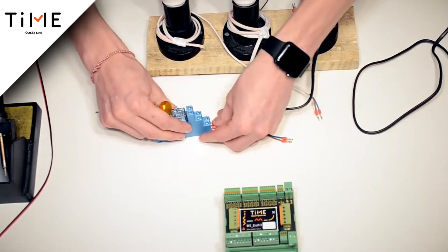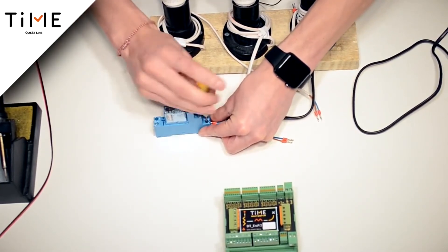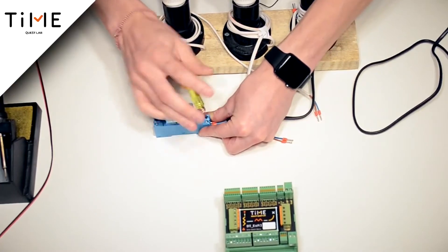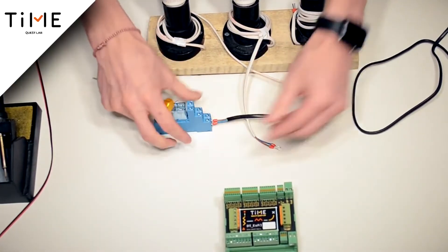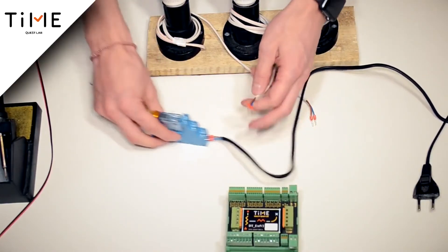After this is done, it is necessary to connect the light bulb we want to control to the power supply. If I want the light to light up, then I connect the power to the normally open contact.